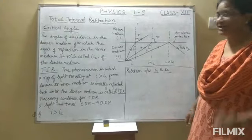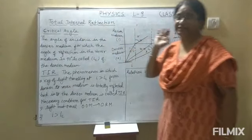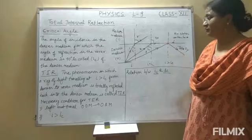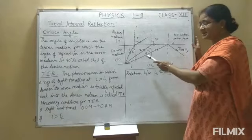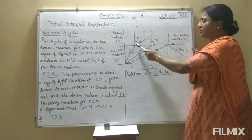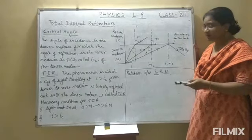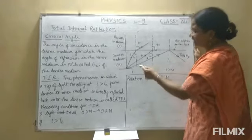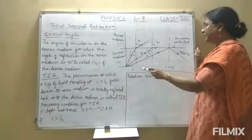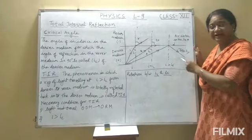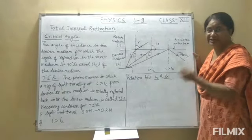We will see the special case of refraction — total internal reflection. When a ray of light passes from denser medium to rarer medium, some part of the light gets reflected and some gets refracted. But if we increase the angle of incidence, then at a particular angle of incidence, the entire part of the light gets reflected back into the same medium. This is called total internal reflection.